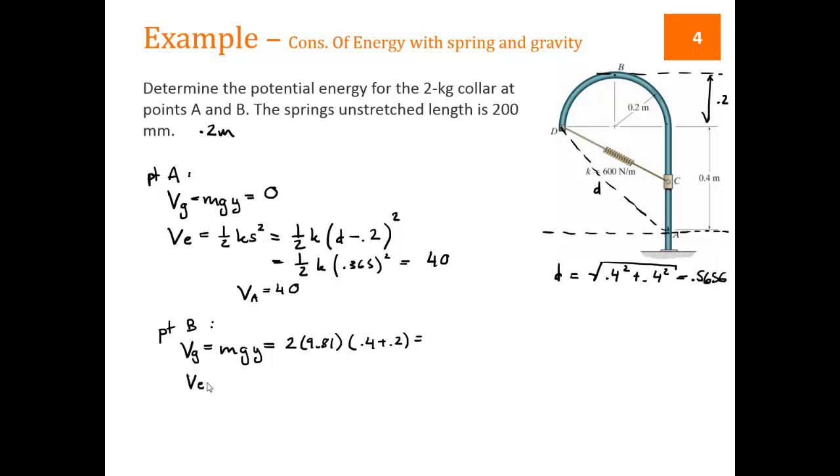Then our elastic potential energy is 1/2 KS squared. This is now our distance D2. Here's D1. D2 is part of a triangle also. Each side is 0.2, the radius. So 0.2 squared plus 0.2 squared, square root gives us 0.2828.